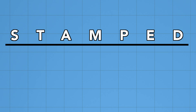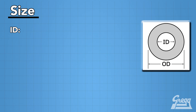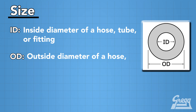S of STAMP stands for size. First we need to know ID, which is the inside diameter of the hose. This is important to ensure volume and flow rates of the hydraulic assembly are proper. Next you need to know OD, which is the outside diameter. This is important because you need to properly select the clamps for mounting and routing of that hose assembly.